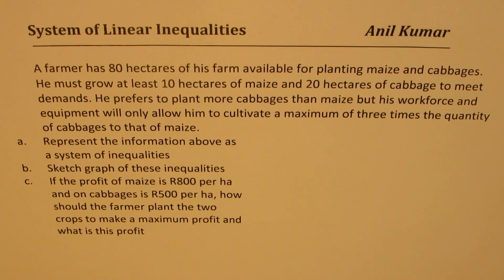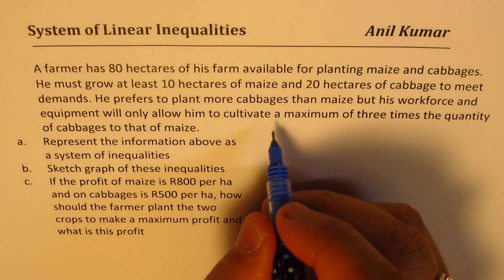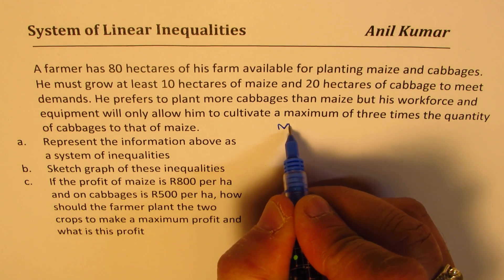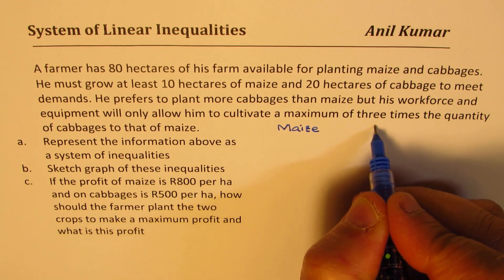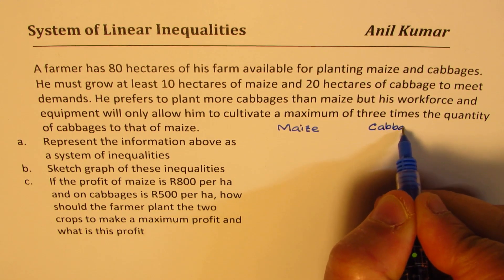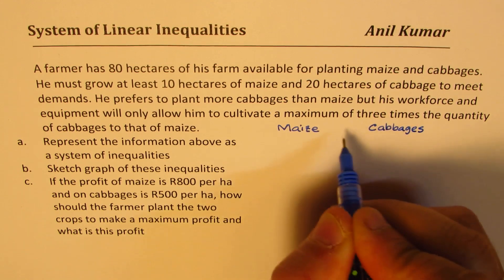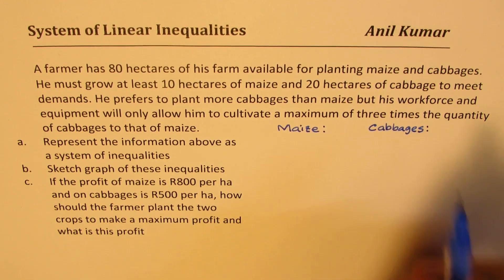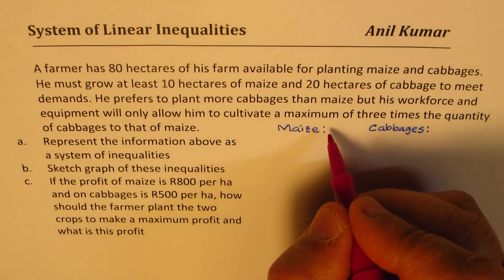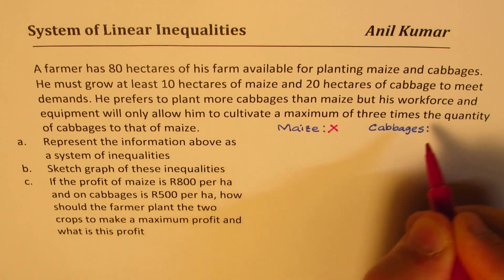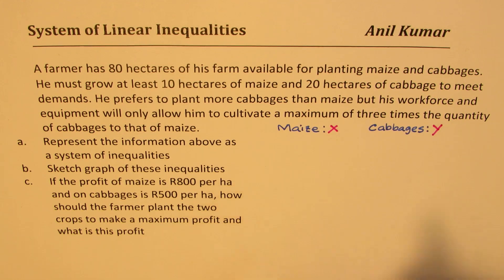Let's begin by defining our variables. We're talking about two things: maize and cabbages. We'll take maize along the x-axis and cabbages along the y-axis, so maize is X and cabbages is Y. You could do it the other way too — it doesn't really matter.